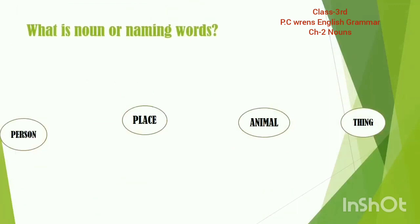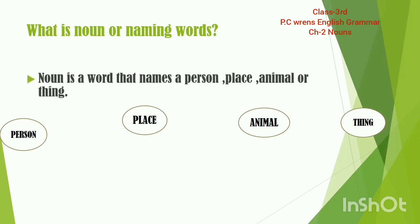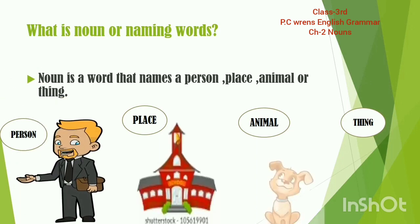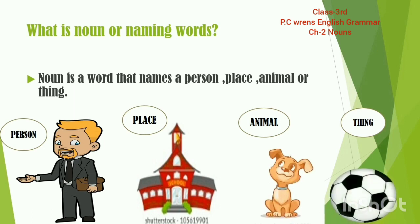So, the first question is: what is a noun, or naming words? Noun ya naming words kia hota hai? The definition is: a noun is a word that names a person, place, animal, or a thing. Noun jo hai kisi bhi person ka naam, place ka naam, animal ka naam, aur chizo ka naam — this is what we call naming words. Name of a person, name of a place, name of an animal, name of a thing.